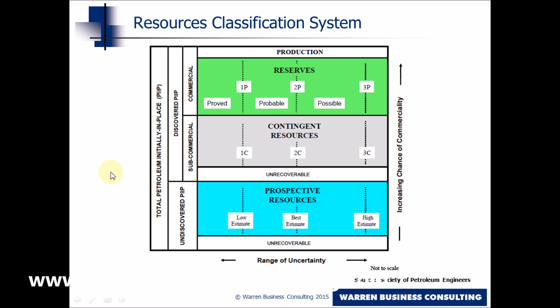So if we consider all the oil and gas, or the total petroleum initially in place, then some of that is discovered and some is undiscovered. So here are the different tranches according to the SPE. There is production — that's oil and gas that has been produced and is now in a pipeline, or perhaps on a ship, or in a storage tank.